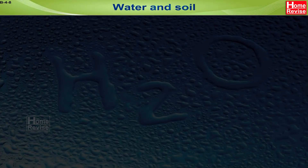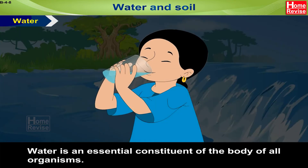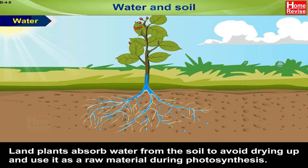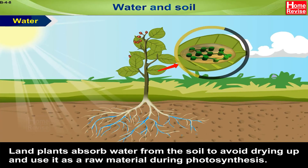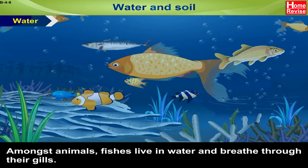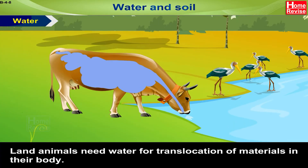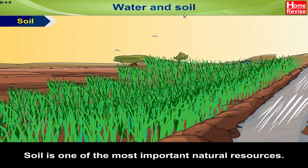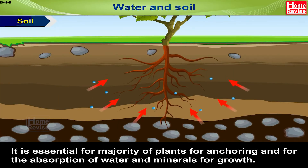Abiotic components — Water and Soil: Water is an essential constituent of the body of all organisms; no organism can survive without water. Land plants absorb water from the soil and use it as a raw material during photosynthesis. Some plants like lotus and water chestnut live in water. Fishes live in water and breathe through their gills. Land animals need water for translocation of materials in their body. Soil is one of the most important natural resources — essential for the majority of plants for anchoring and for absorption of water and minerals. Many animals live in soil by making burrows or holes.